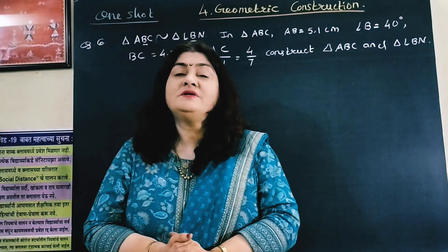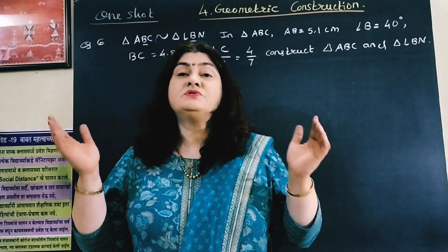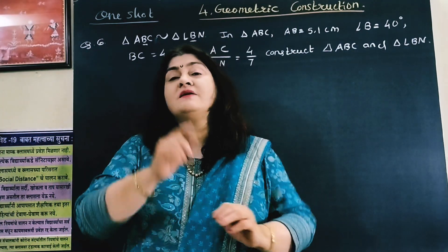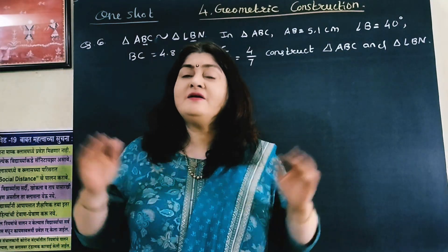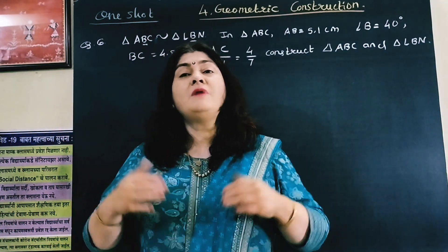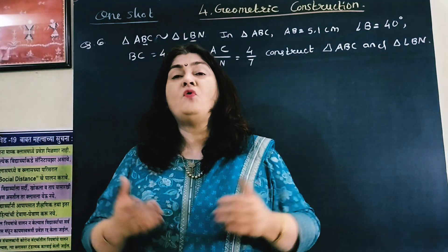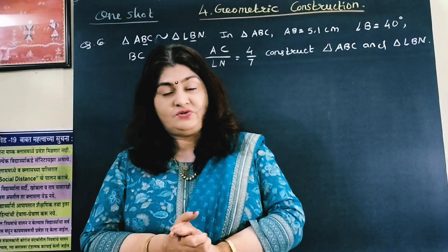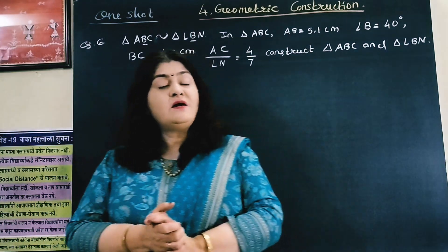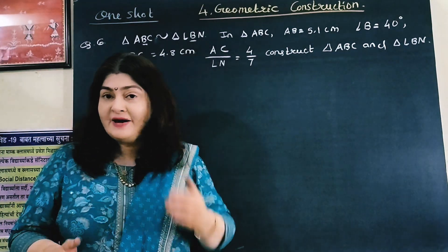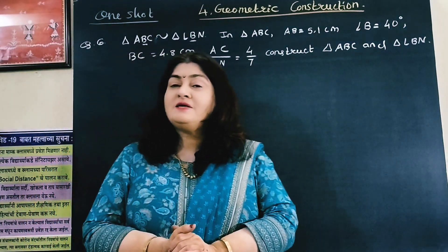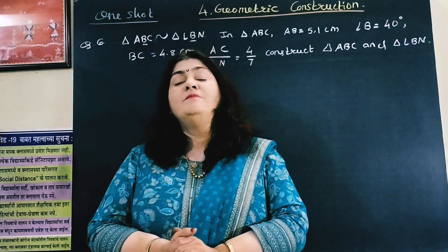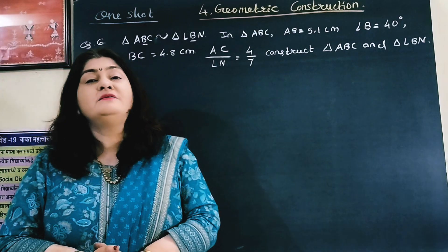Now we are on the last construction — the sixth. If you learn how to draw this sixth construction, I am 100% sure that in the March 2024 board exam you won't have any trouble with the chapter on construction. In the sixth sum, we have to draw two triangles — triangle ABC and triangle LBN — and both these triangles are similar.